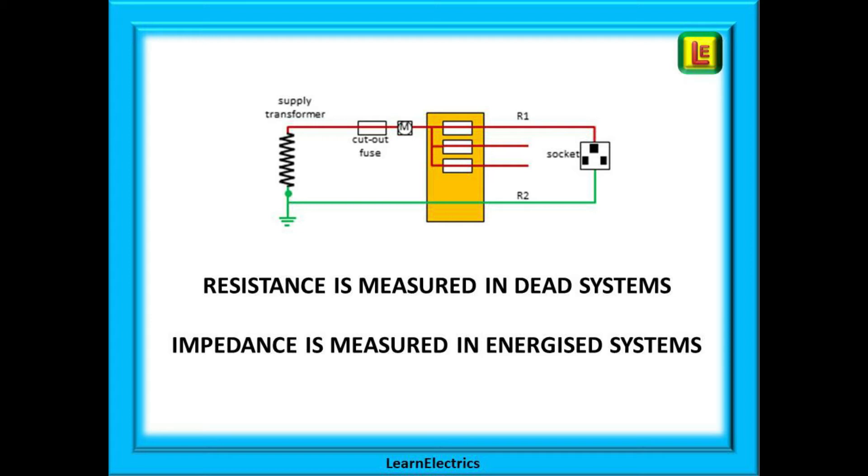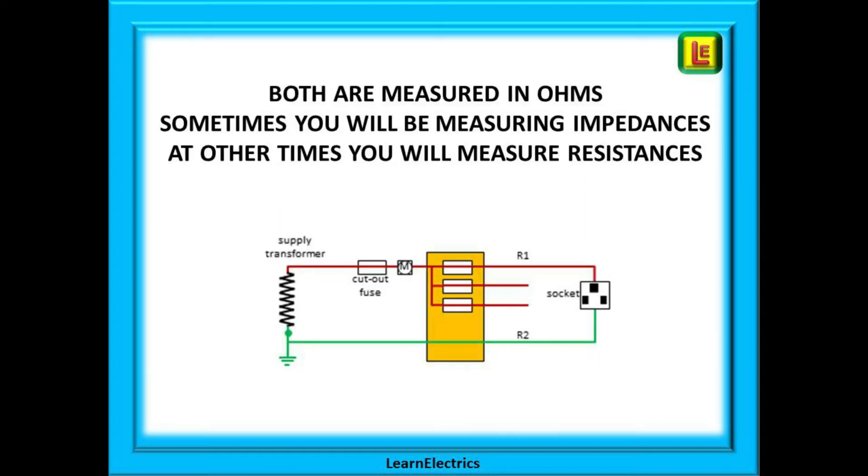Impedance changes slightly with increasing frequency in AC circuits, but at 50 Hertz and for our ZS measurements, we can regard impedance and resistance as the same thing and the same value. Both impedance and resistance are measured in ohms. Sometimes we are measuring impedances and sometimes we are measuring resistances. Do not worry if you use the wrong terminology occasionally, just make sure you are doing the testing correctly.